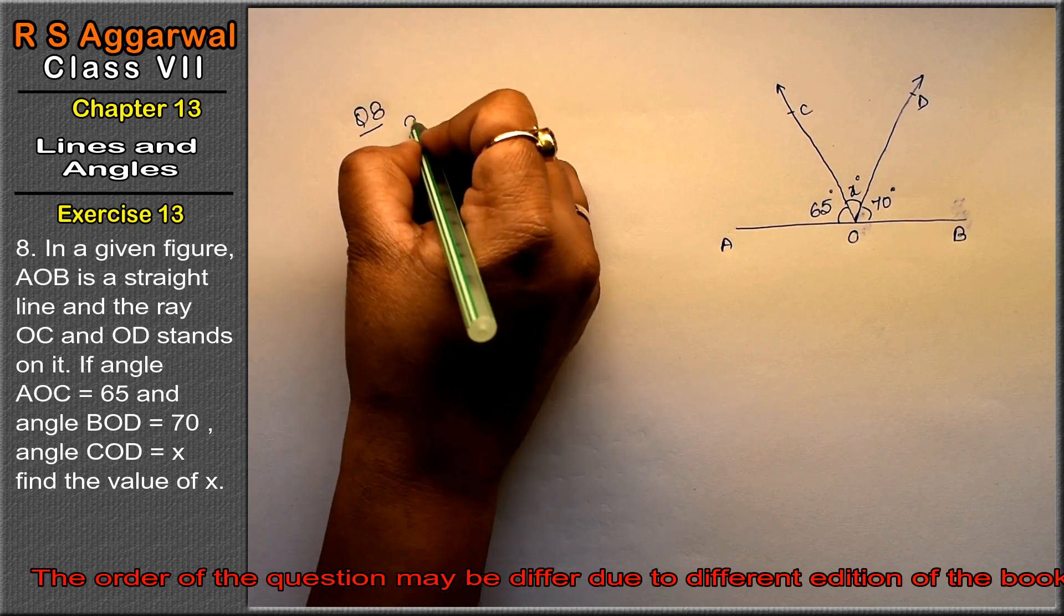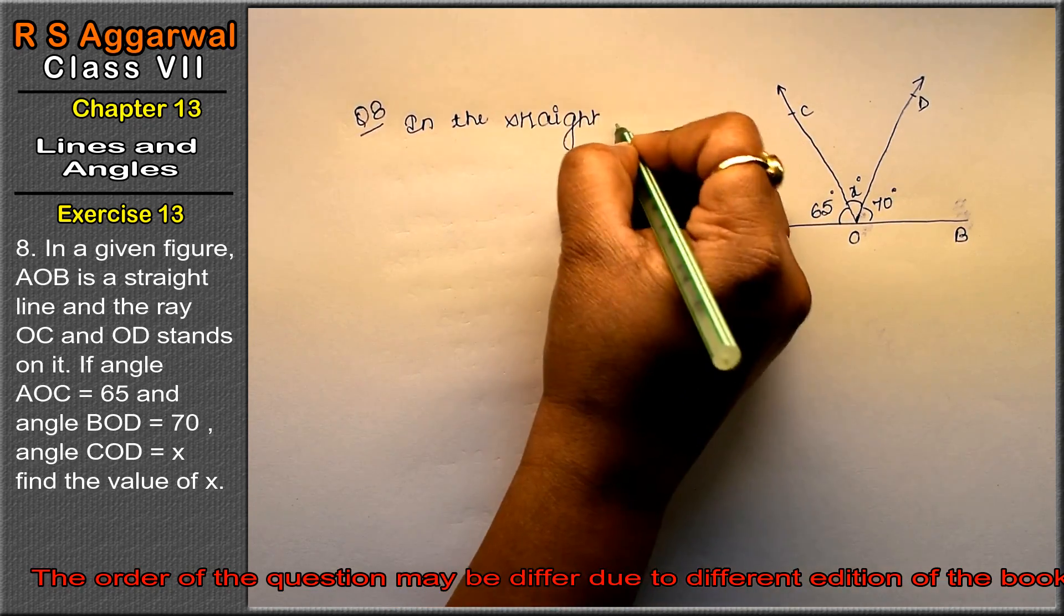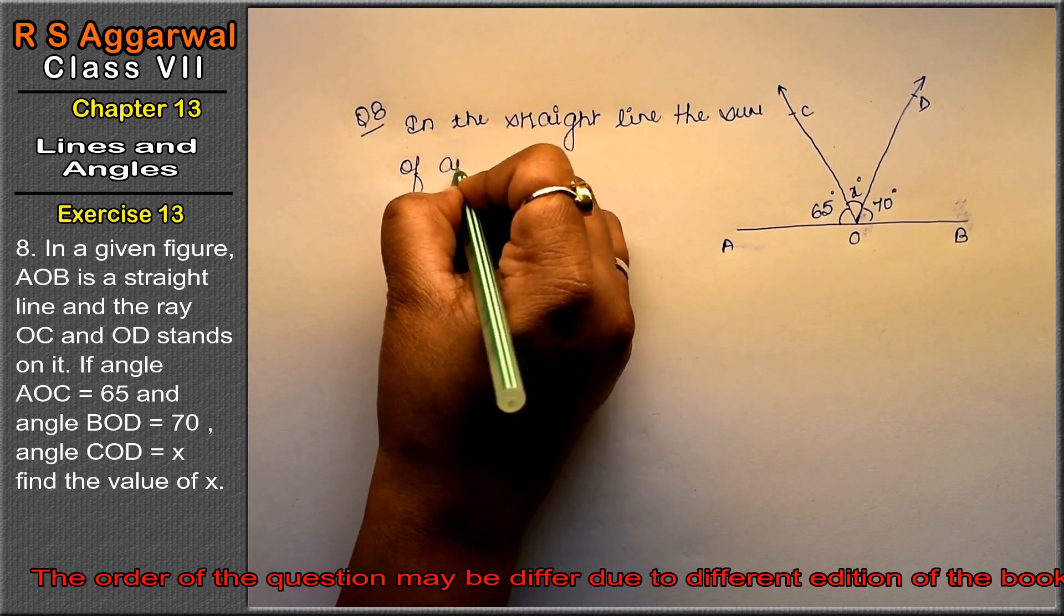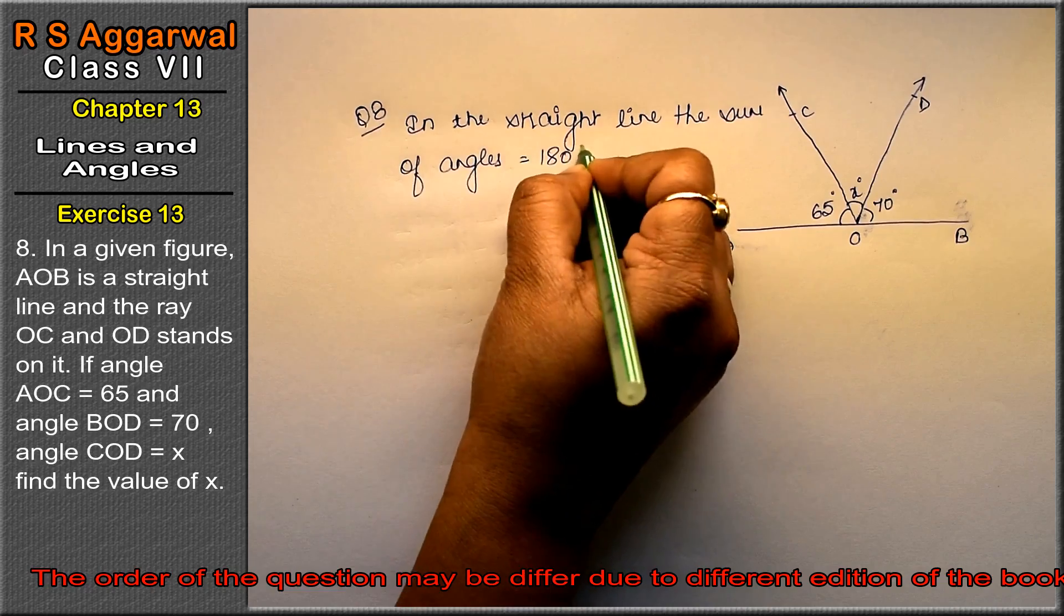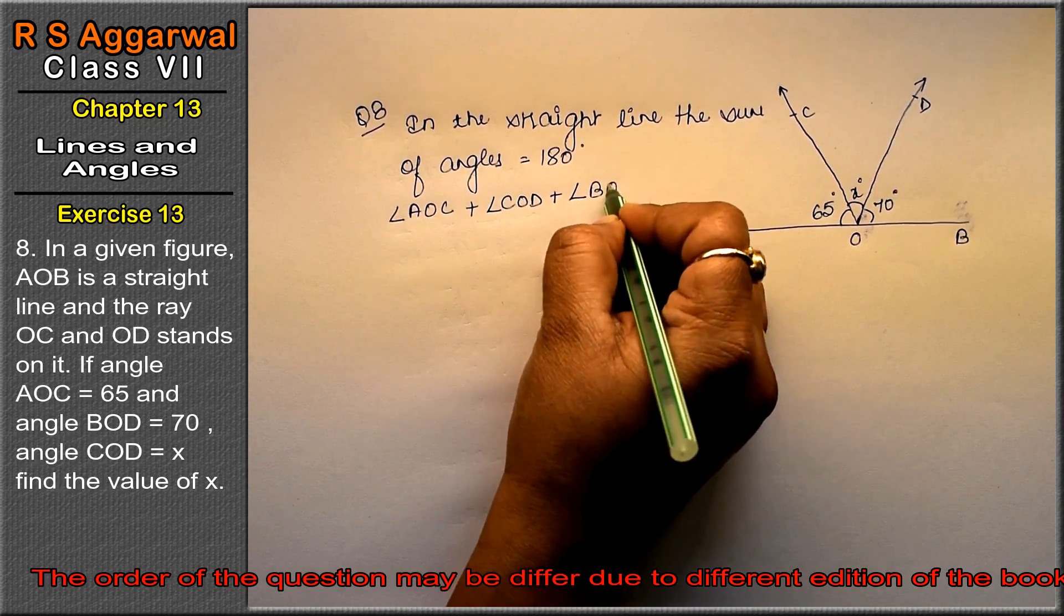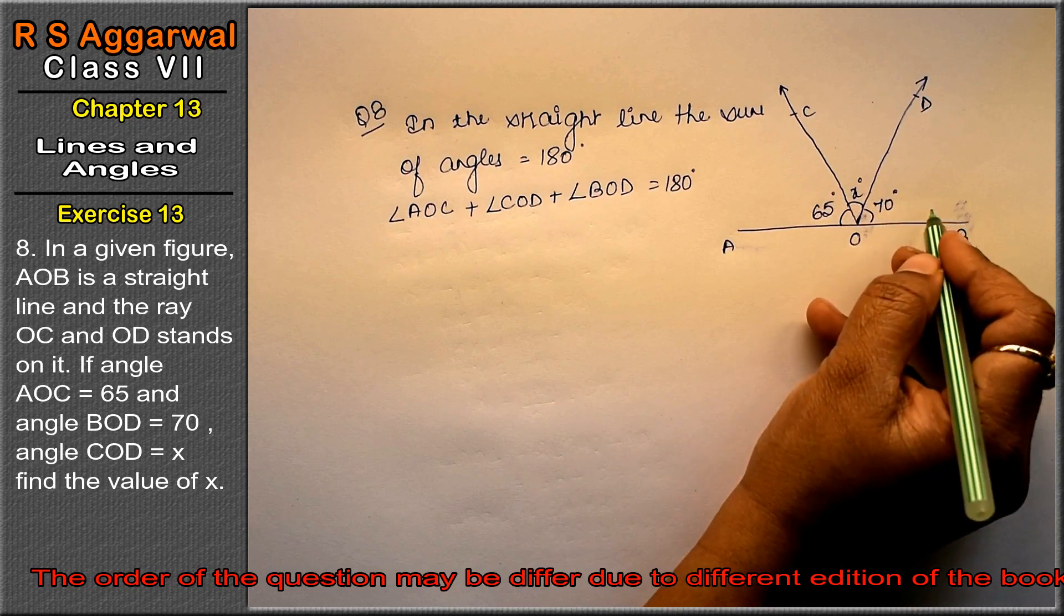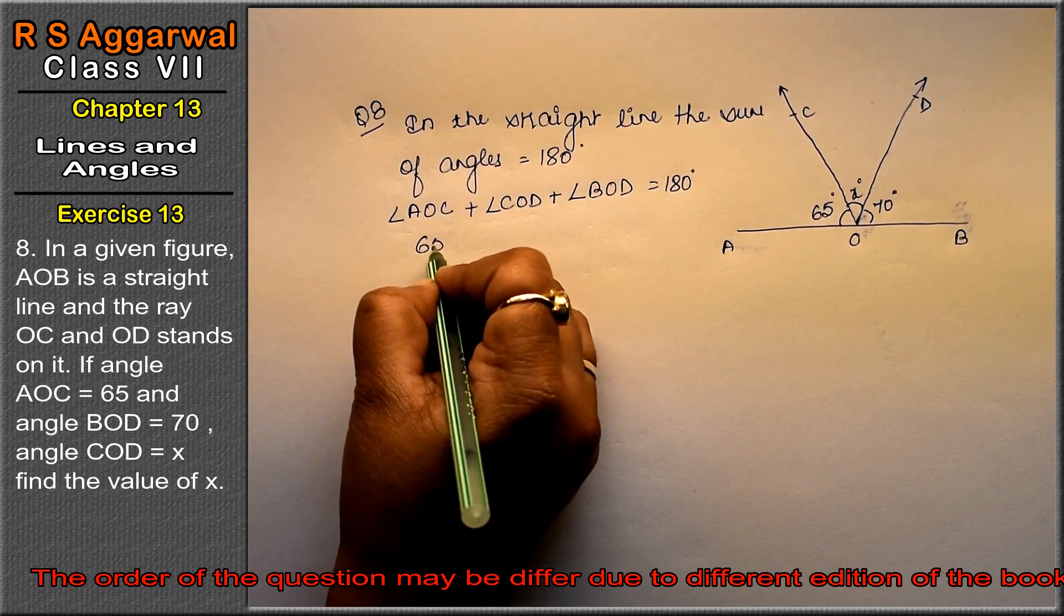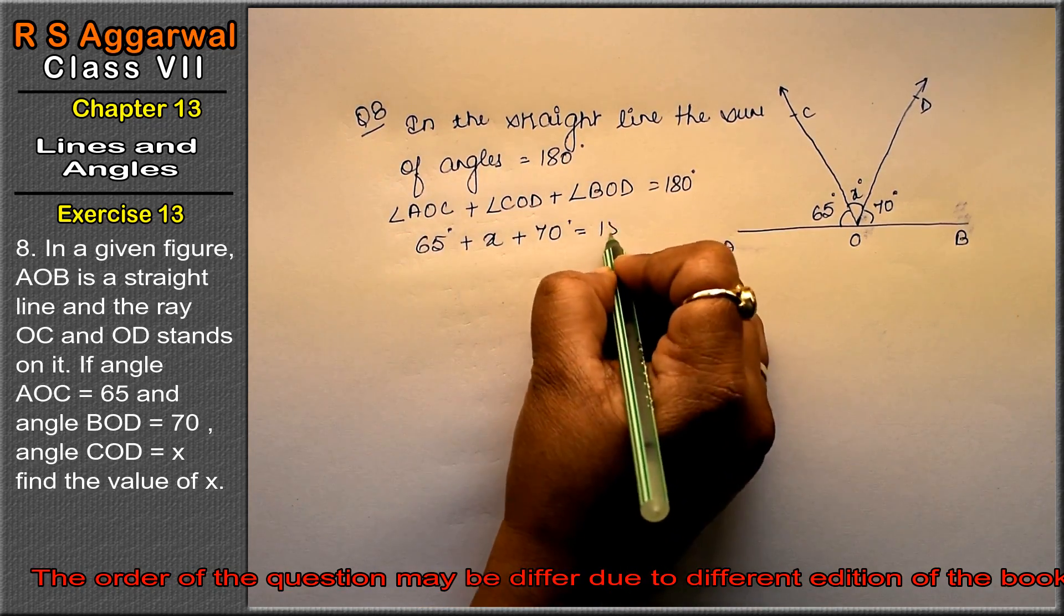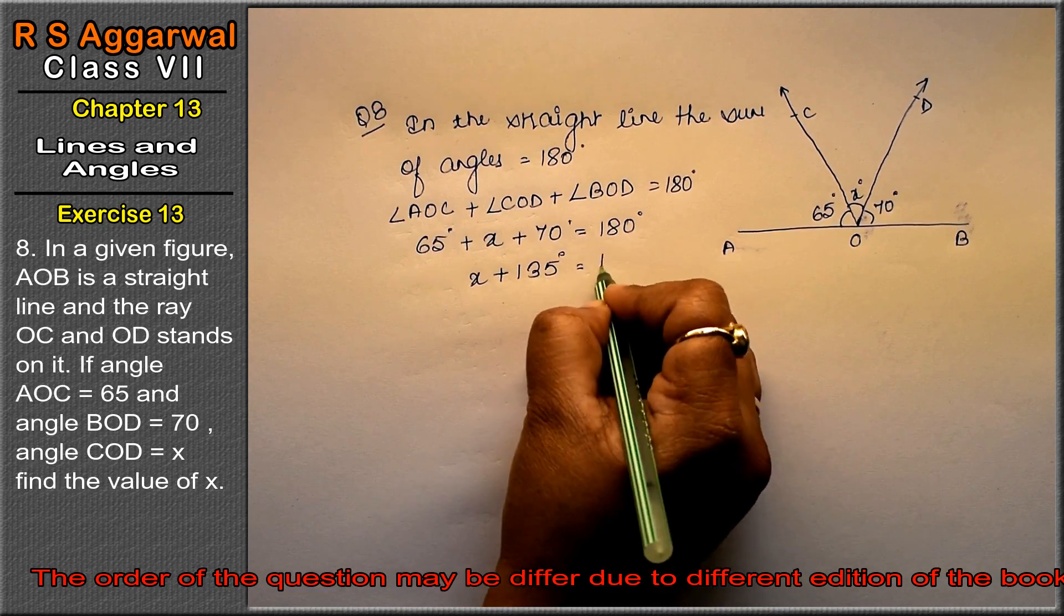Right friends. So we know, in a straight line, the sum of angles equals 180 degrees. Right friends. So angle AOC plus angle COD plus angle DOB equals 180 degrees. Now we have the values: 65 plus x plus 70 equals 180 degrees.